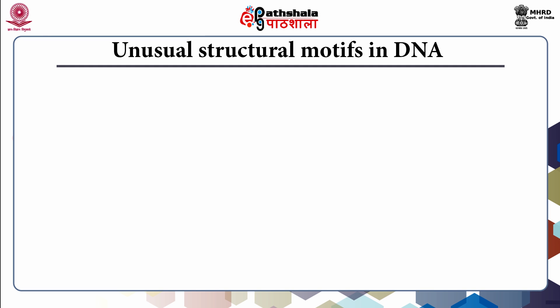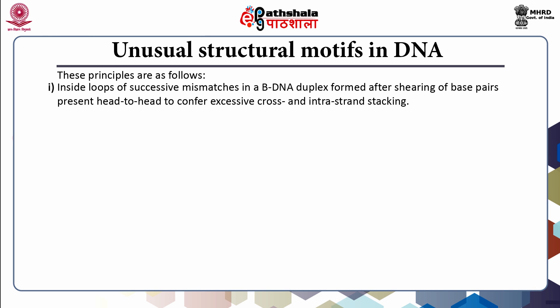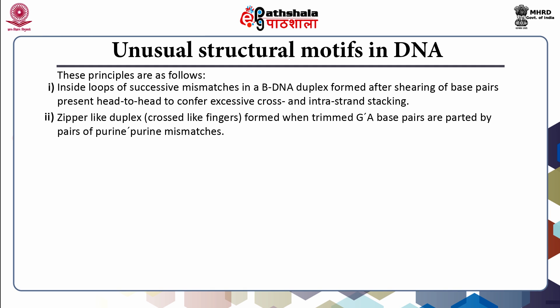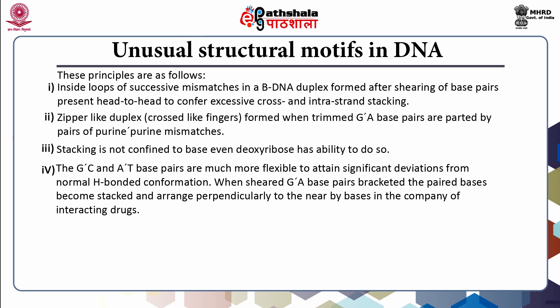For unusual structural motifs in DNA, there are certain general principles. First, inside loops of successive mismatches in a B-DNA duplex, formed after shearing of base pairs present head-to-head, confer excessive cross- and intrastrand stacking. Second, zipper-like duplexes or crossed finger-like structures are formed when sheared GA base pairs are separated by a pair of purine-purine mismatches. Third, stacking is not confined to bases — even deoxyribose has the ability to do so. GC and AT base pairs are much more flexible to attain significant deviation from normal hydrogen-bonded conformation.